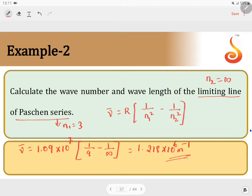So, this is the wavenumber. Next is the wavelength. We know that wavenumber is equal to 1 by lambda.